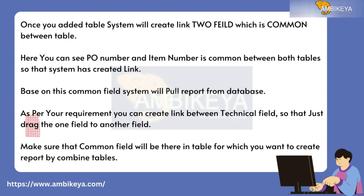Here you can see that PO number and item number are common between both tables, so the system has created a link based on this common field. The system will pull the report from the database. As per your requirement, you can also create a link between technical fields by dragging one field to another. Make sure that the common field exists in the tables for which you want to create a combined report.